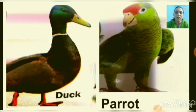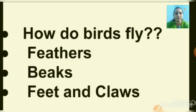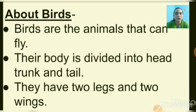Now have a look at this picture. This is the picture of a duck and the second picture is of a parrot. In this lesson, we have already learnt how do birds fly, then about feathers, about different types of beaks and feet and about claws. Today we will do the revision of part 1, that is how do birds fly and types of feathers.